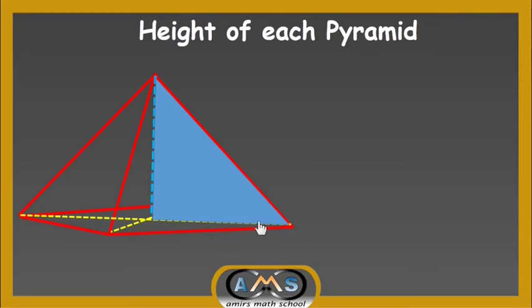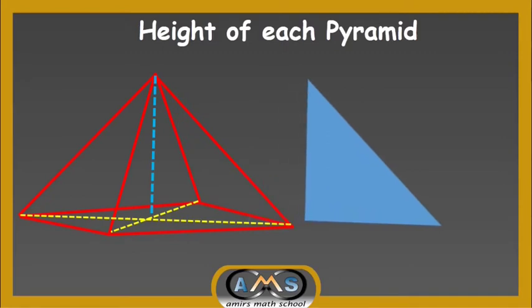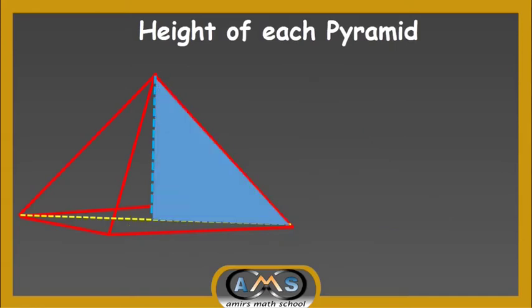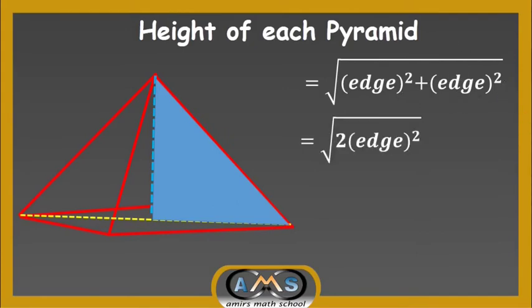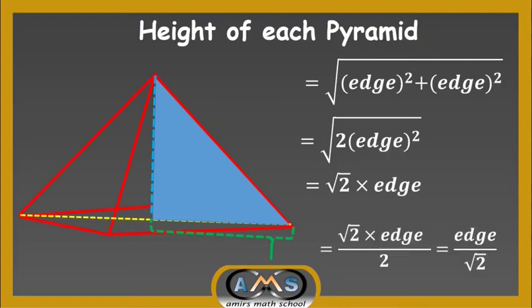The height, half of the diagonal, and the edge form a right-angled triangle. Applying the Pythagorean theorem, we can find the value of this height when the edge length is given. First, let's find the value of the diagonal. The diagonal and two edges form a right-angled triangle, so the diagonal equals √(edge² + edge²) = √(2 × edge²) = edge√2. This is the length of one diagonal, i.e., the distance between two vertices. The half diagonal is therefore edge√2 / 2, which equals edge / √2.